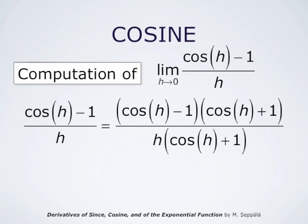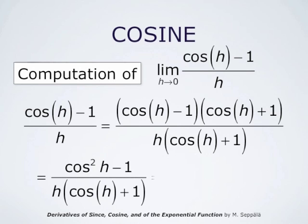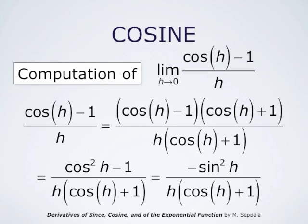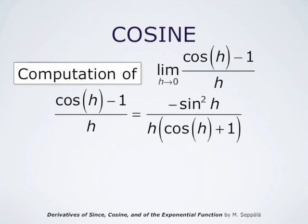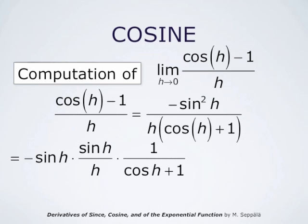Now, cosine of h minus 1 times cosine of h plus 1 is cosine squared of h minus 1. And cosine squared of h minus 1 equals negative sine squared of h. So we conclude that cosine of h minus 1 divided by h can be rewritten as negative sine squared of h divided by h times cosine of h plus 1. This groups as negative sine of h times sine of h divided by h times 1 divided by cosine of h plus 1. We know that the limit of sine of h divided by h as h goes to 0 is 1.